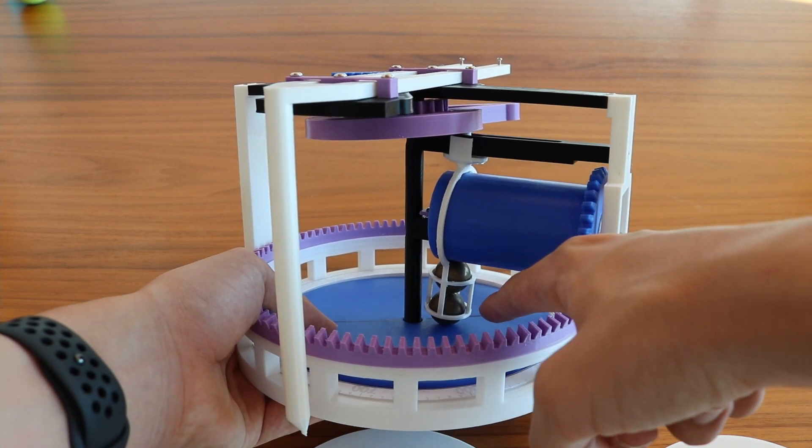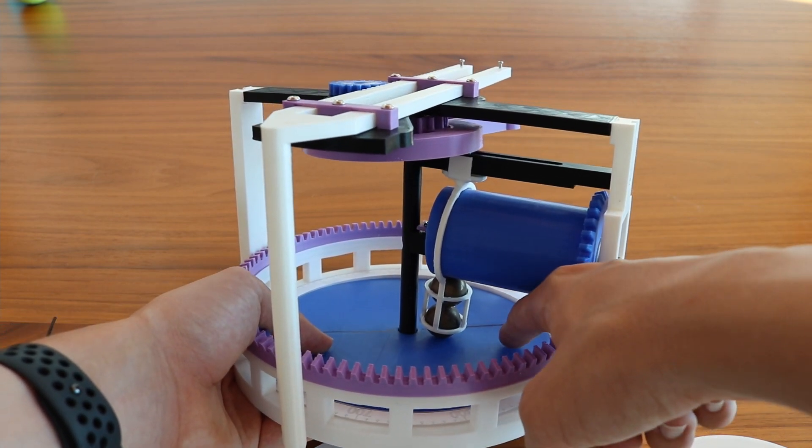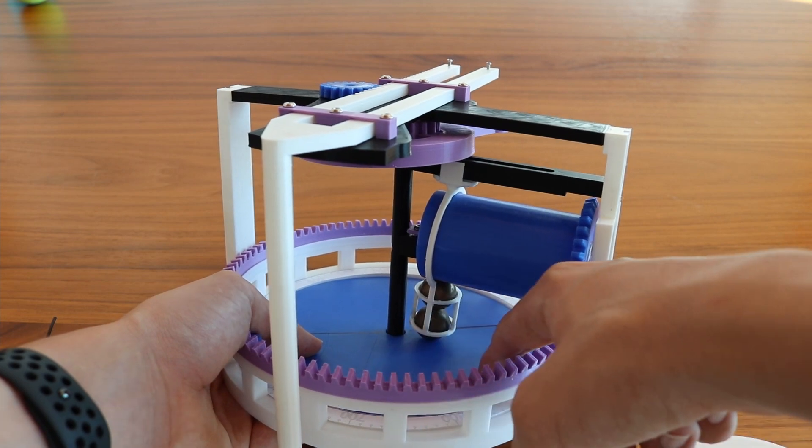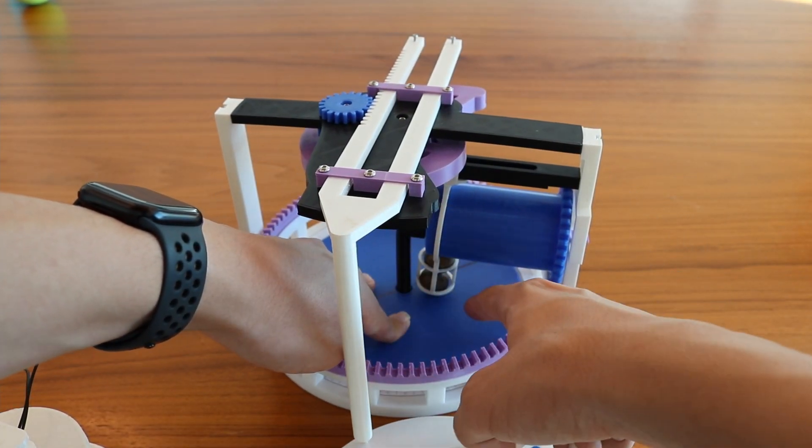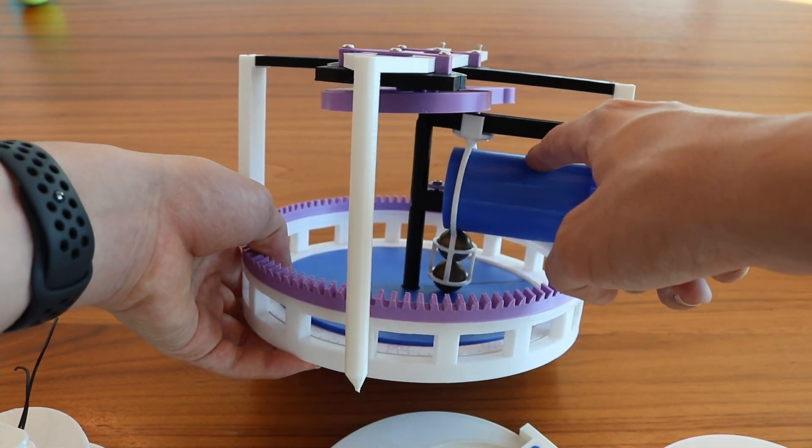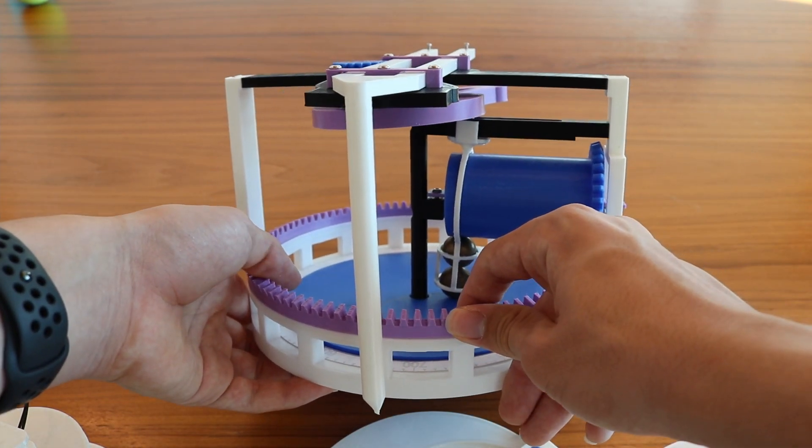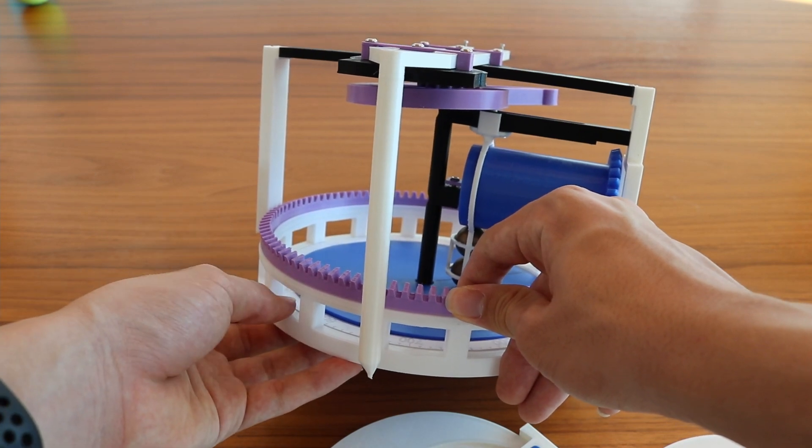This pin then holds the two spheres of the mechanical integrator in place as it rolls against the bottom disc, and since the entire top assembly turns, these balls roll against the bottom disc, which then roll against this barrel, which then turn this gear that is attached to the final output pointer.